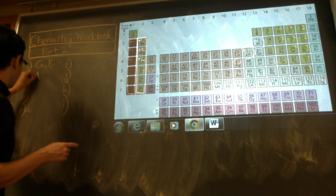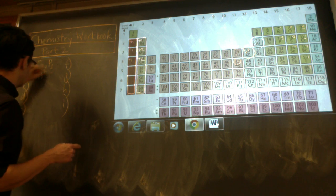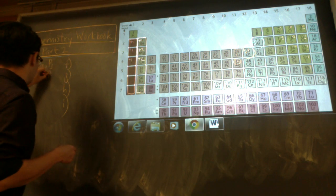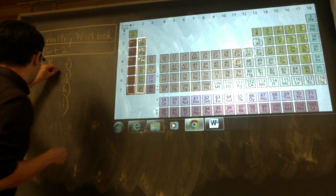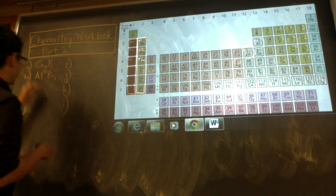Aluminum bromide. Al three plus, bromide - bromine is one minus, so AlBr3.